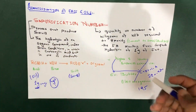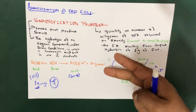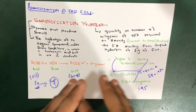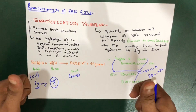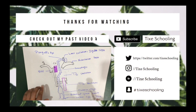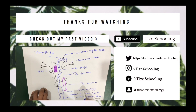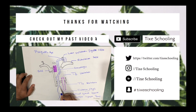This is the basic idea regarding the saponification number, which we use for the identification of fats and oils. In the next video we will talk about the acid number, Polanski number, Reichert-Meissl number, and a few other concepts. Keep visiting Tiger Schooling for anything and please comment below. Thank you.